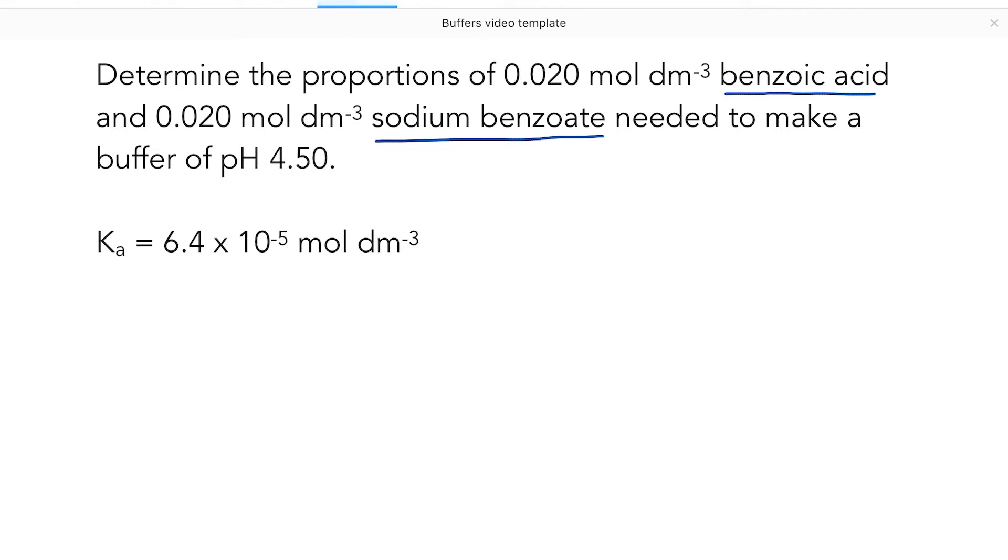Determine the proportions. What's it asking? It's actually asking for our ratio of HA to A-, the ratio of the weak acid to its salt. And I've written it that way specifically because that's how the question asked it, from the acid to the salt ratio. And we need to be aware of that as we work through our calculation.